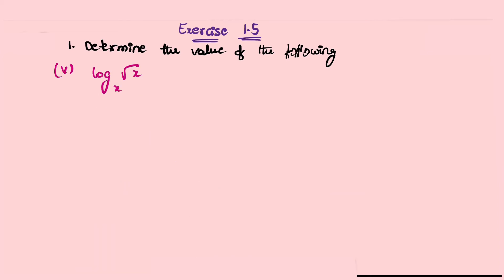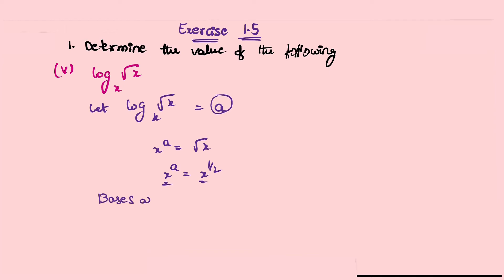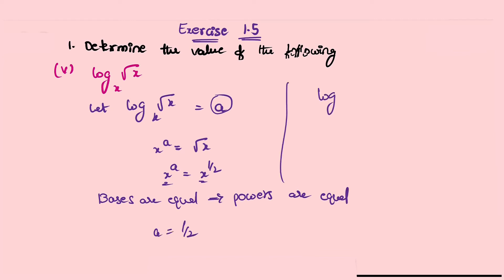Fifth problem: log base x of √x. Let log base x of √x equal to a. Exponential form: x^a = √x. Now √x = x^(1/2), so x^a = x^(1/2). Bases are equal so powers are equal: a = 1/2. Therefore log base x of √x equals 1/2.